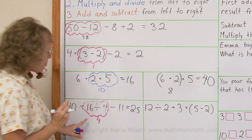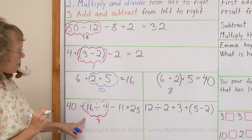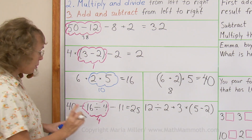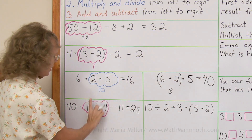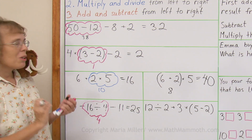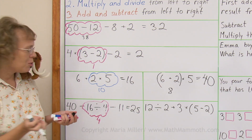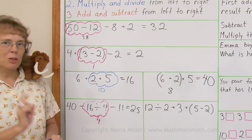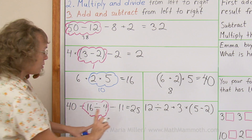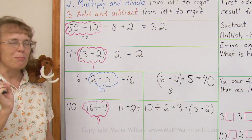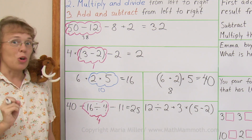Now you can think about this problem also. If you write it down as it was before the bubble — what if you wanted to do the subtraction first, or what if you wanted to do this other subtraction first? What would you do to it? Think about it. That's your homework problem.